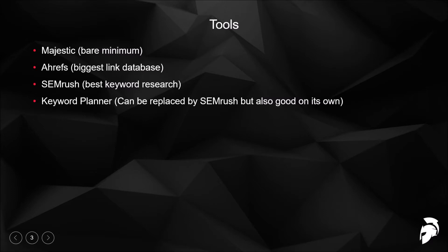SEMrush has the best keyword research in my opinion. I usually pair it with Keyword Planner because sometimes the search volumes vary and contradict each other, so I look at both. SEMrush is great because you can input a competitor's URL and see exactly what keywords they're ranking for and what position they're ranking at.